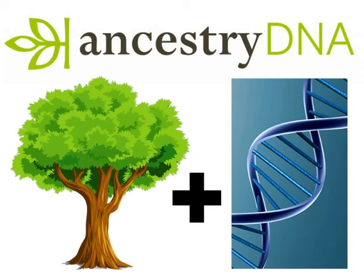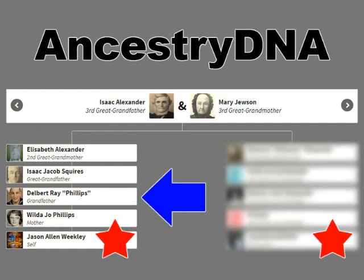Right now, AncestryDNA is the only one that combines trees — the actual research that people have done — with DNA, and links it up so that it'll spell out for you who's related to who. And sometimes you find out that your grandpa really is your grandpa. So you just go through, have a close look at relatives, who matches who and where, take notes, and you start to build up a DNA-verified tree.